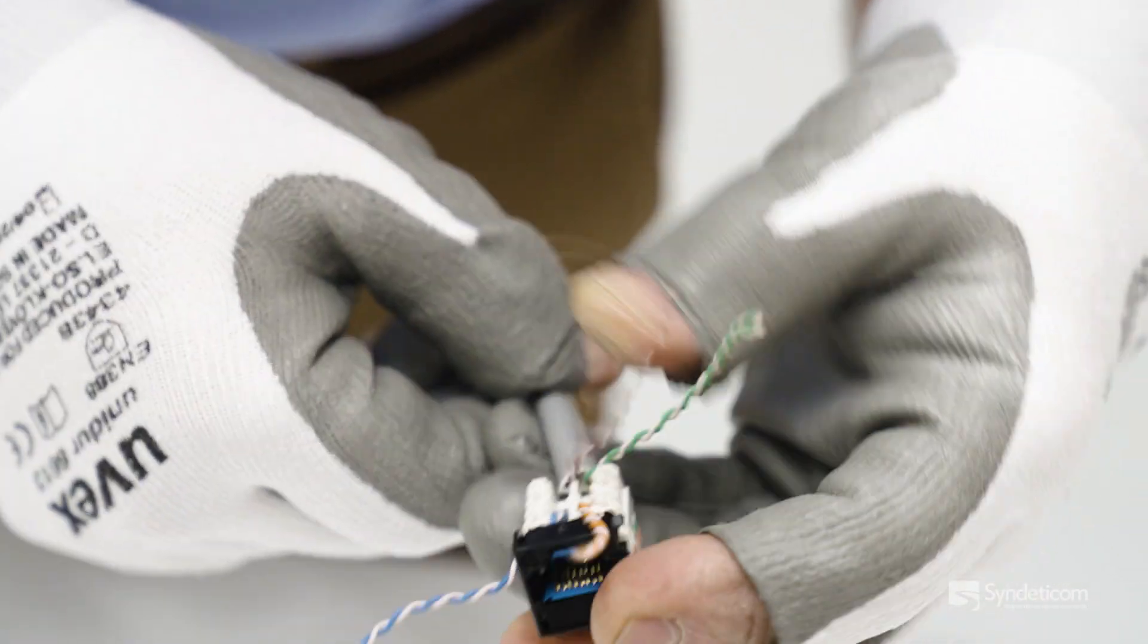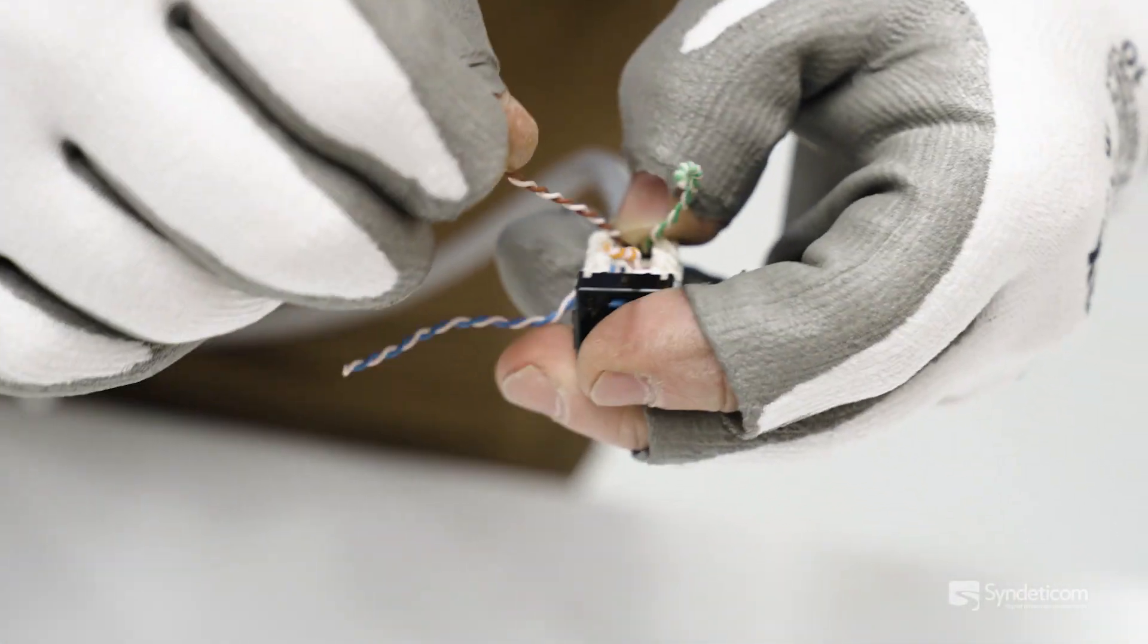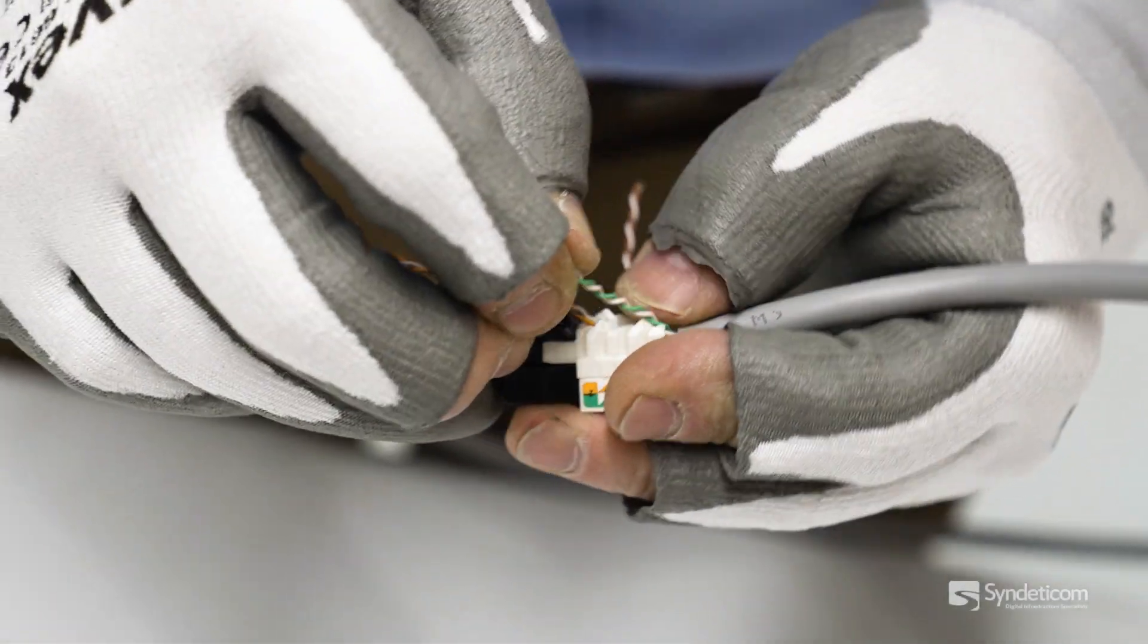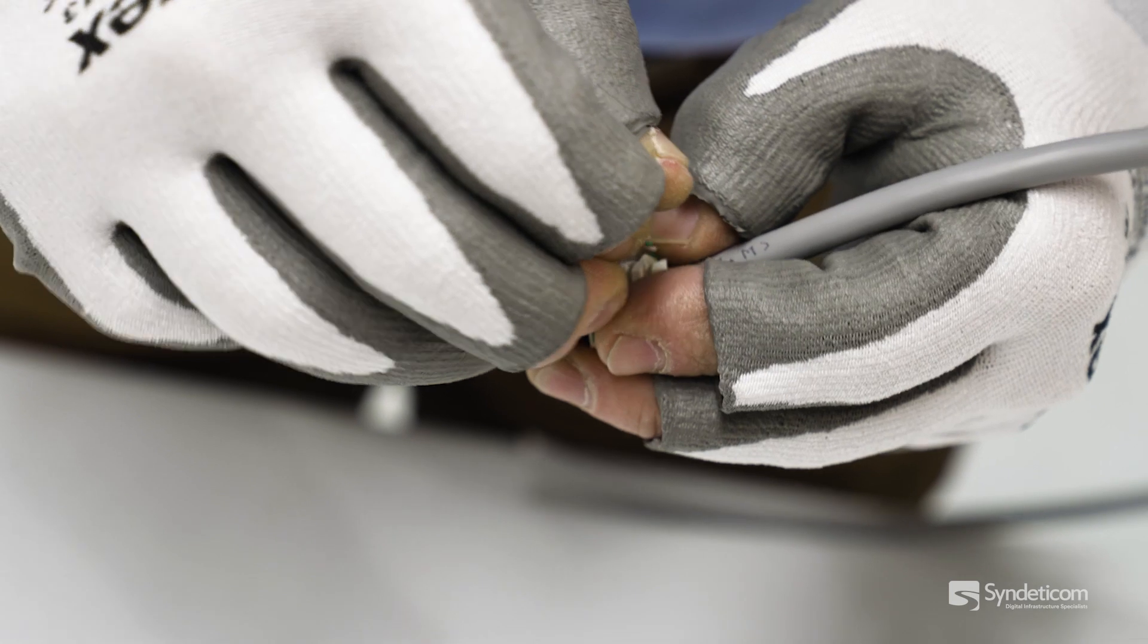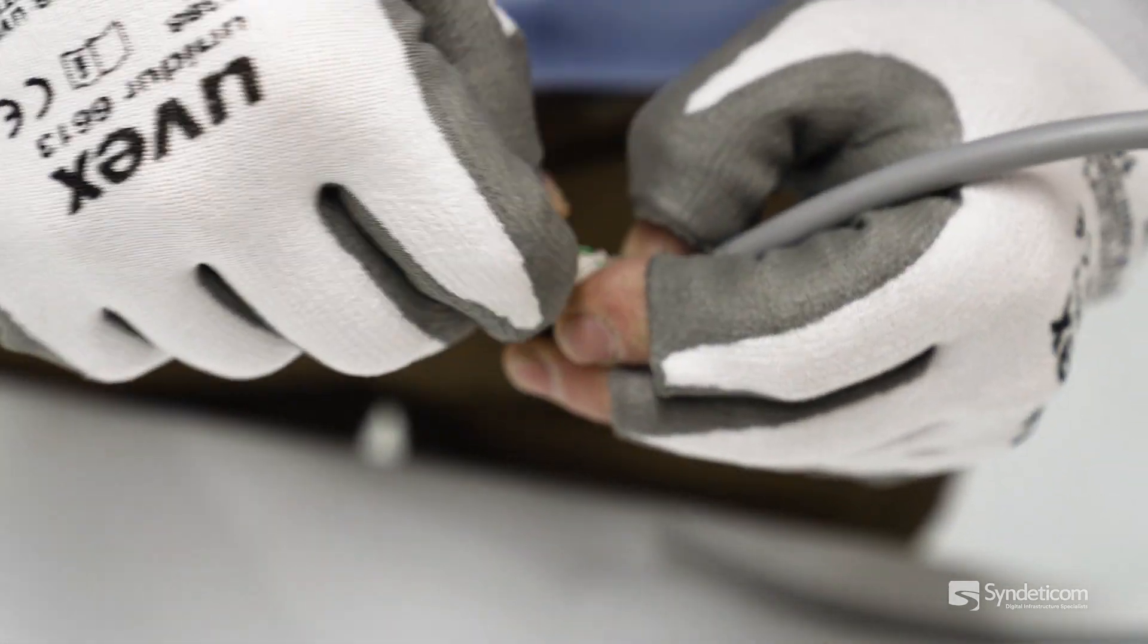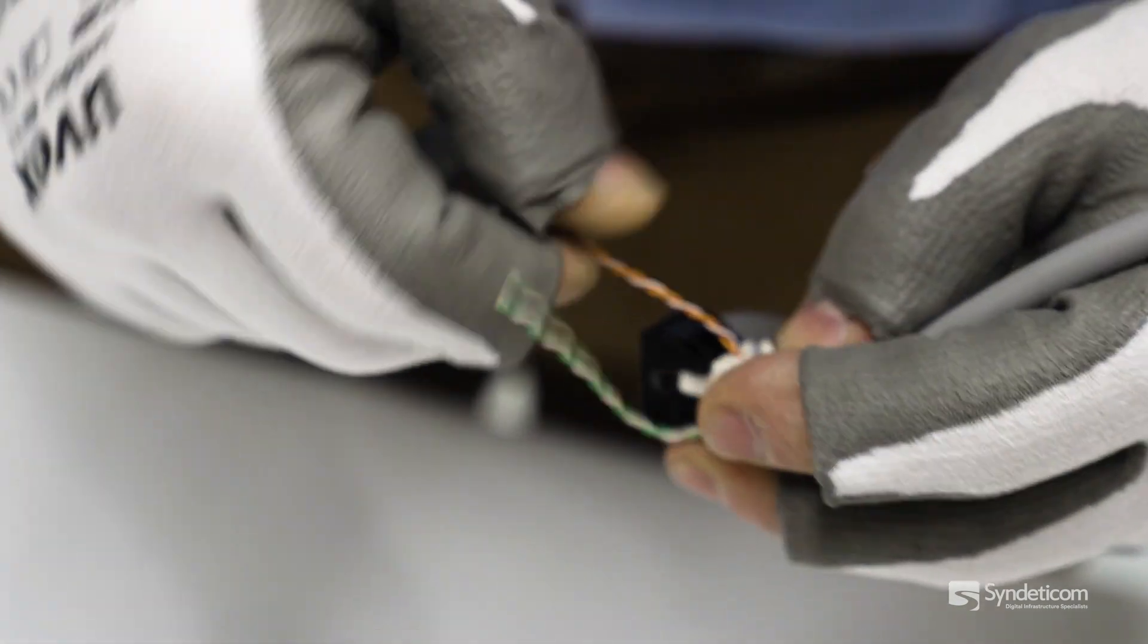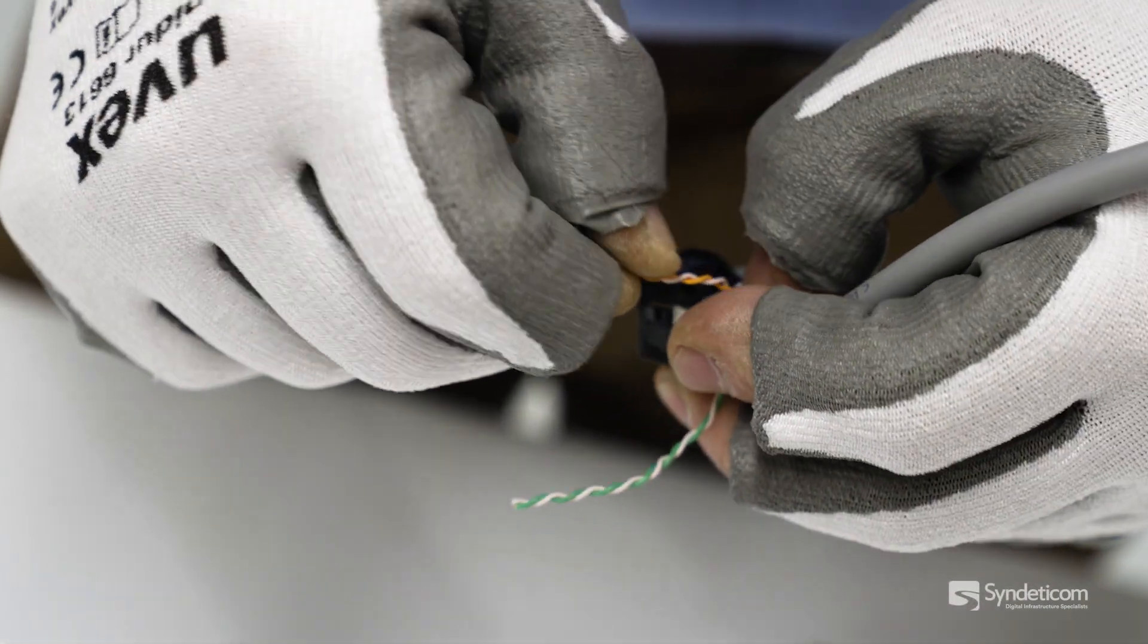Lock it over there and do the same with these ones. Once again, keeping your nail nice and close behind the back so you're not untwisting any more than you have to.